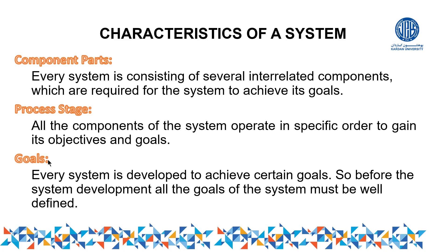In summary, a system requires: components or parts, proper connectivity or coordination between them, and a defined goal. If any one of these is missing, there is no proper system. For example, if employees exist and goals are set but employees are not connected or working together properly, the goal will not be achieved.